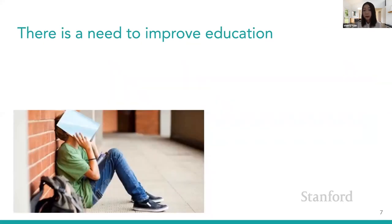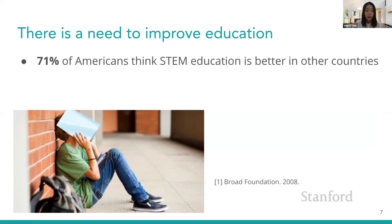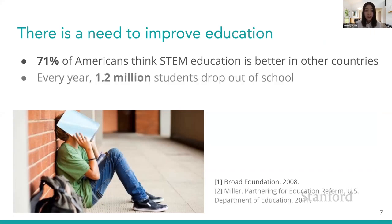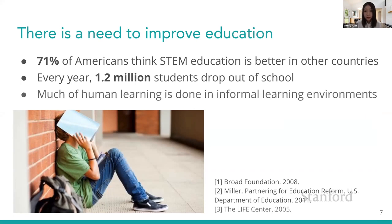We know that there does exist a need to improve current education for both child learning and adult learning. Here are some supporting statistics: 71% of Americans think STEM education is better in other places. According to the Department of Education, every year 1.2 million students drop out of school. And more than 80% of learning happens in informal learning environments.